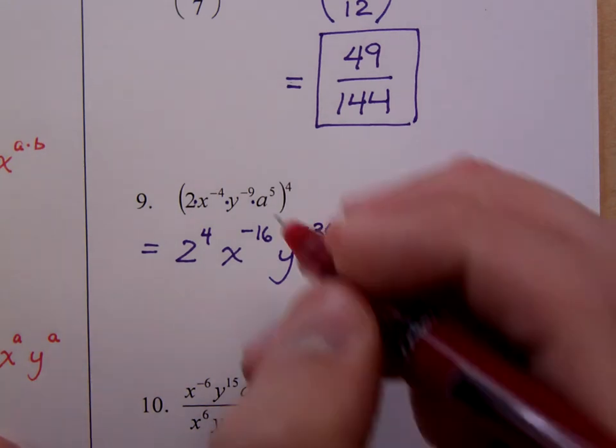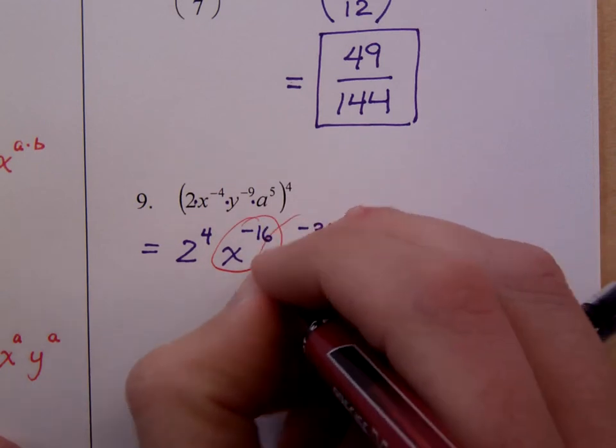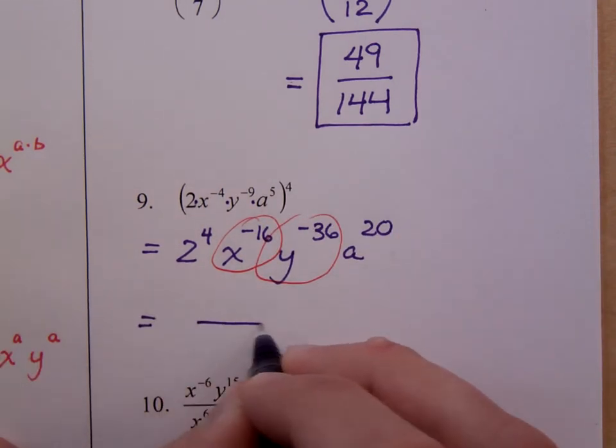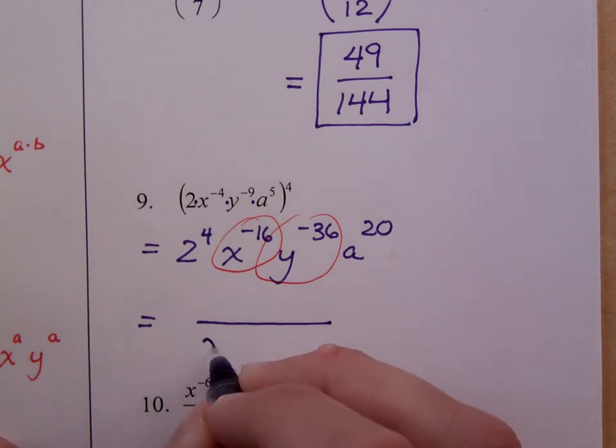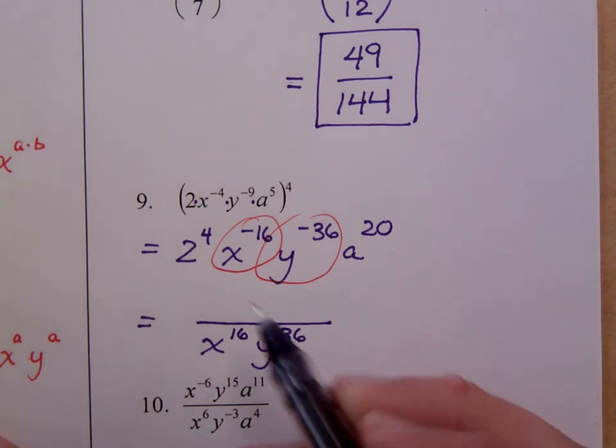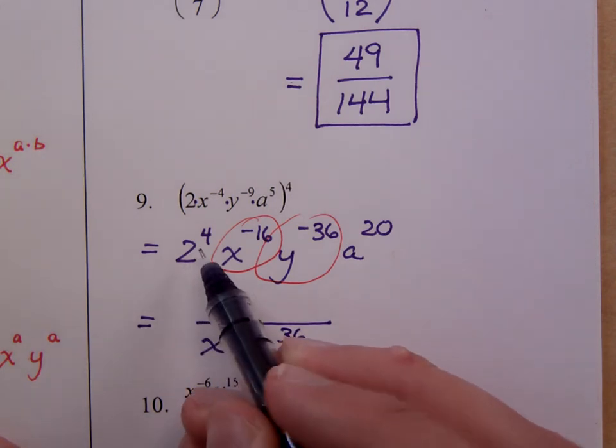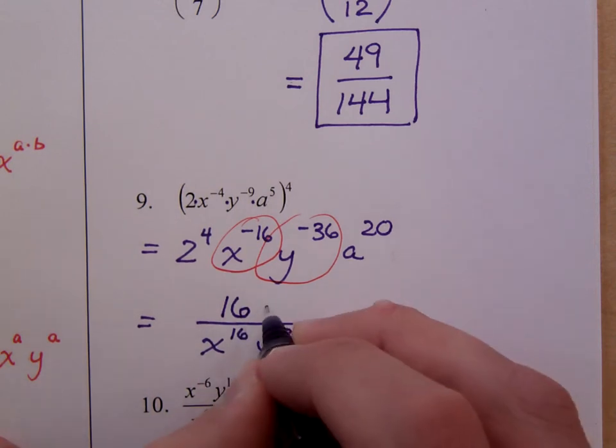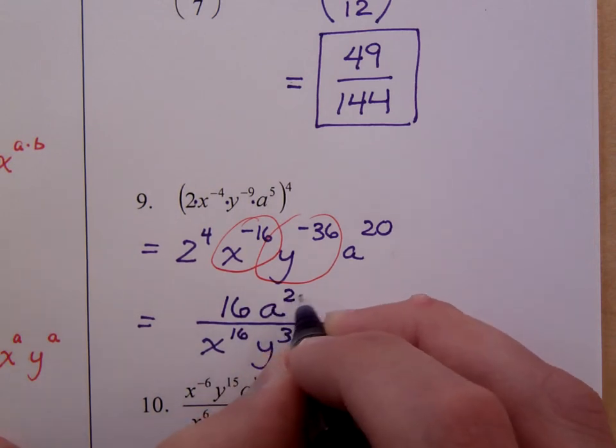So we have negative exponents here that need to be dealt with, so they're just going to go in the denominator. So we have x to the positive 16th, y to the positive 36th in the denominator. But you've got to work this out. You can't leave 2 to the 4th as it is. When you raise that power, you get 16. And then there's a to the 20th.